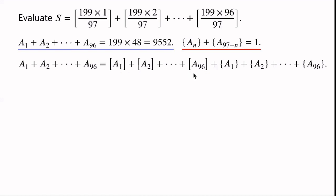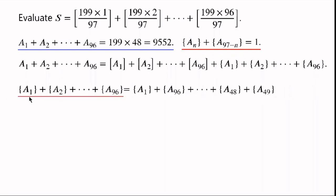Now, a₁ + a₂ + … + a₉₆ can be written as the sum of the integer parts plus the sum of the decimal parts. The decimal parts can be grouped as ({a₁} + {a₉₆}) plus so on, pairing each {aₙ} with {a₉₇₋ₙ}.